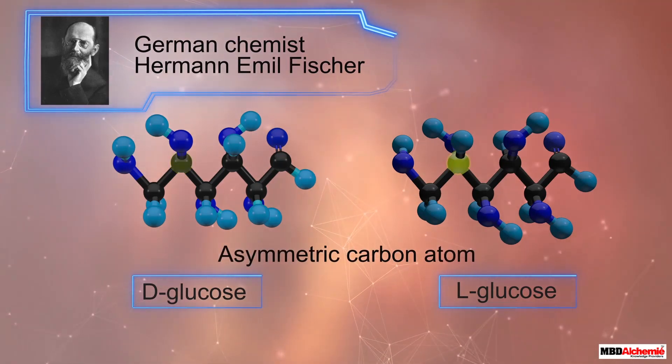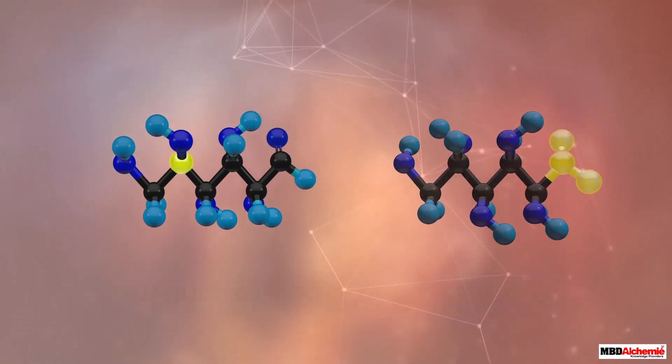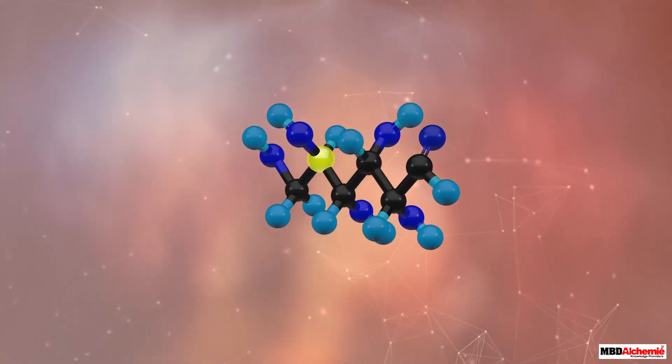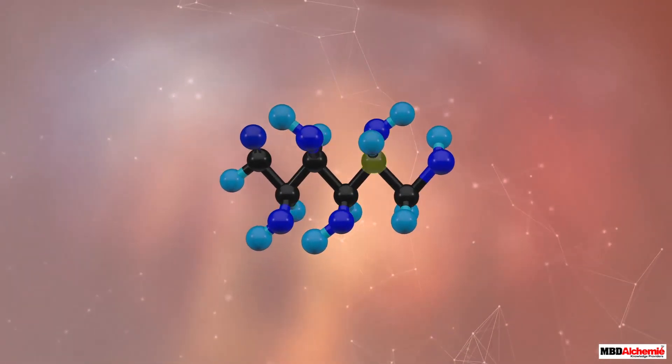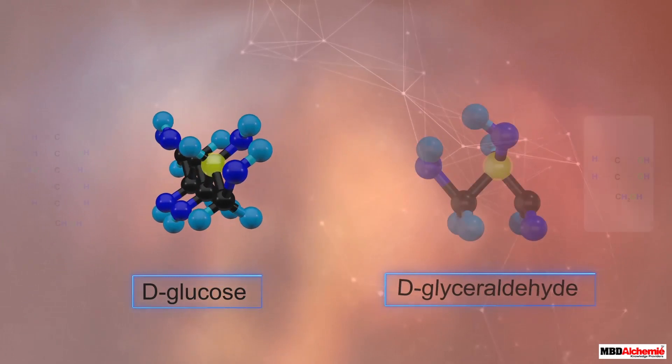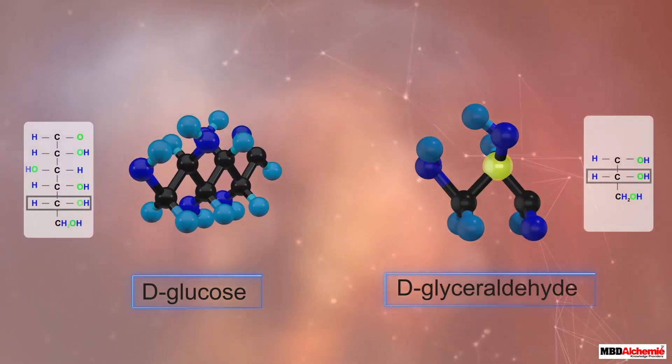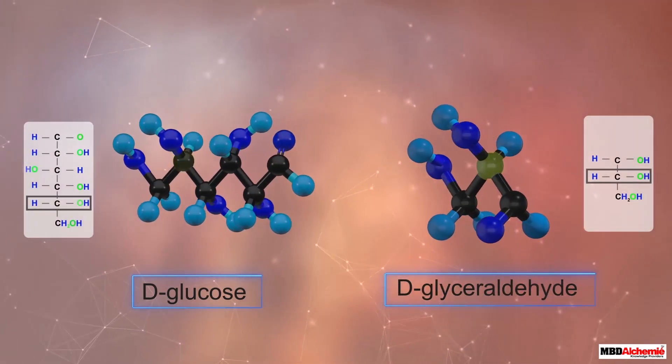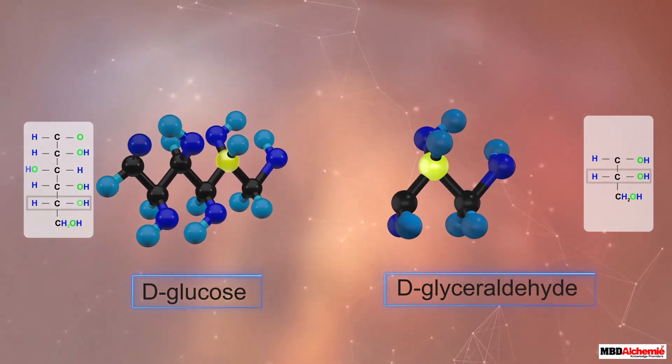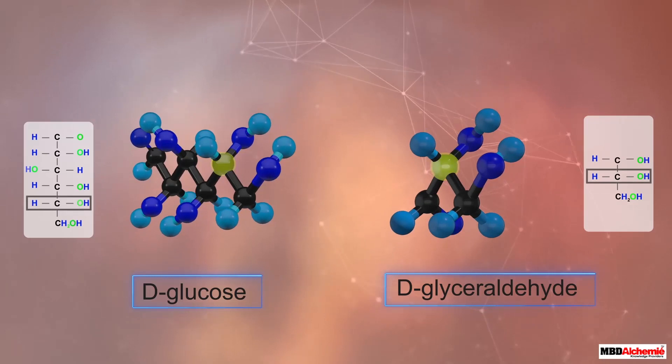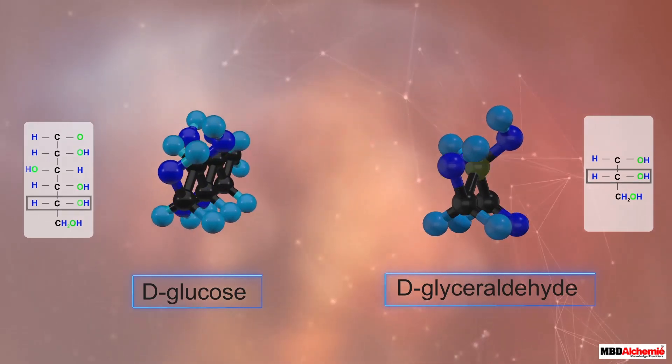The spatial arrangement of the hydroxyl groups around this carbon is compared to that of the groups around the second carbon of the dextrorotatory isomer of glyceraldehyde. If the arrangements are found to be similar, as in the case of dextrose, the monosaccharide is assigned the D notation. That is why dextrose is named D-plus-glucose.